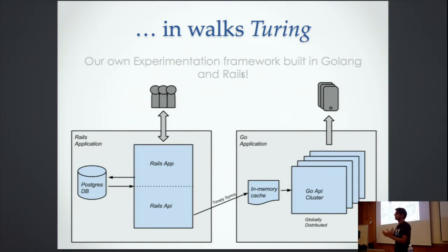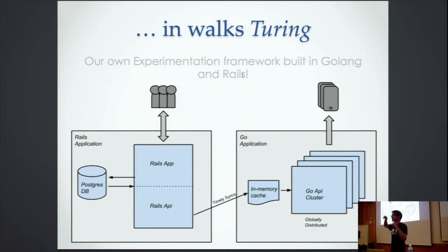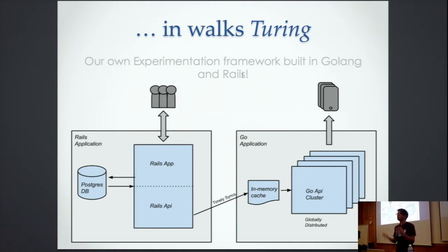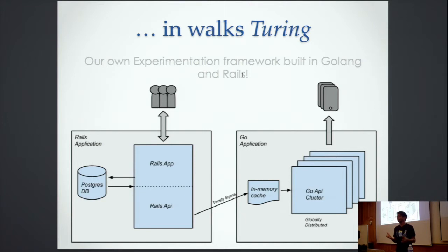Then the clients can start getting the experiments. The clients — mobile clients and web clients — all send a certain context to the Go application, saying: 'I'm an Android client, on app version 2.2.13, with this user ID, from country Singapore — tell me what I should show to this particular user.'